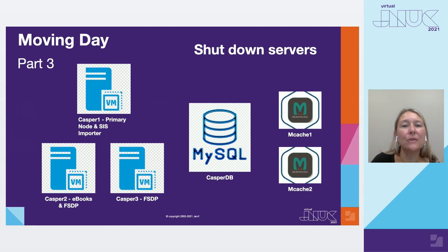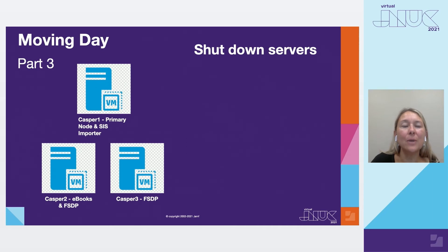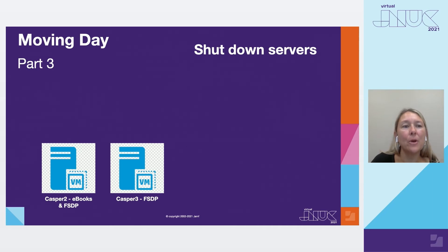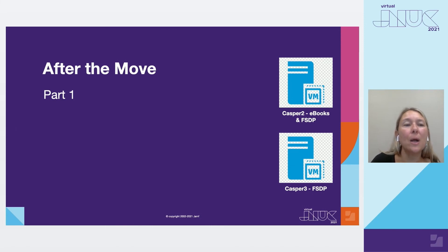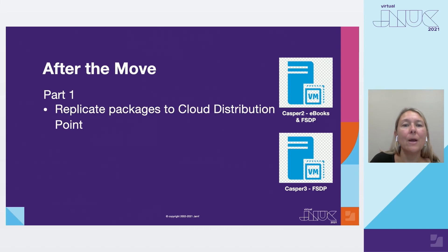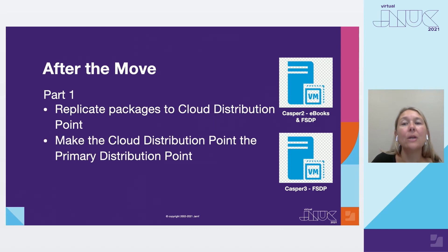The last step that day was to shut down the servers that weren't needed anymore. This included the MCAS servers, the database server, and the primary node. That left us with two file share distribution servers still running. A few weeks after the move, when I was sure that everything was stable in our environment, I replicated our packages to the new cloud distribution point. I made it the primary distribution point, then modified each package policy to point to the cloud distribution point, and deleted the file share distribution point from Jamf.